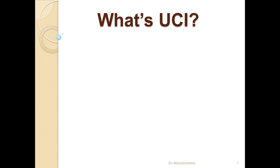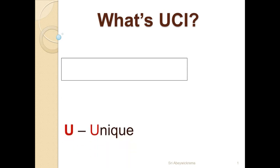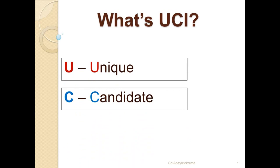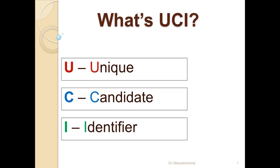Let's have a look at what the UCI number stands for. U stands for Unique, C for Candidate, I for Identifier. So UCI stands for Unique Candidate Identifier. As the name suggests, this is a number given to each and every candidate in order to identify them uniquely. Remember, every candidate is unique, so the exam board needs a way of identifying exactly who you are.